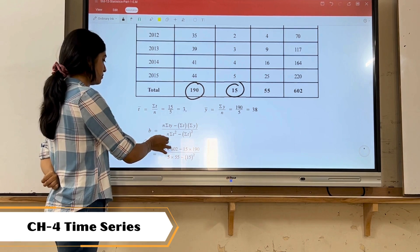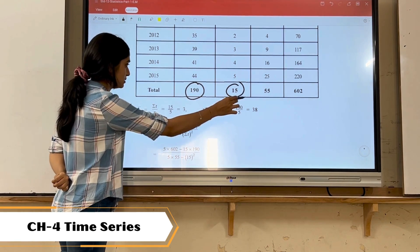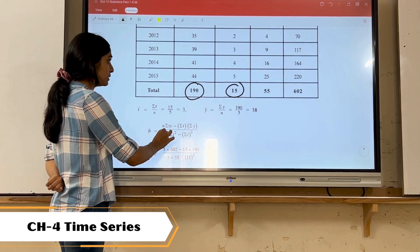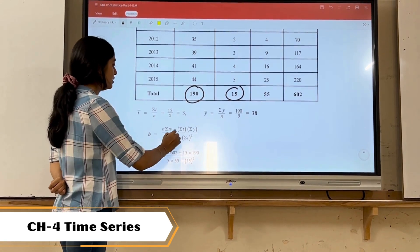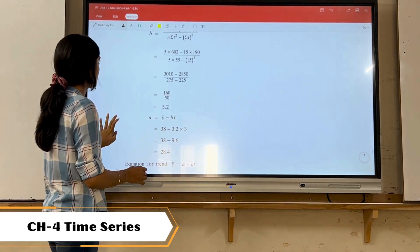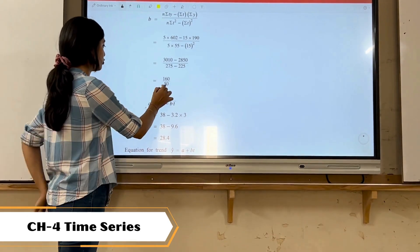Replacing the value of b: n we have 5, sigma t y is 602 minus sigma t sigma y, upon n sigma t square that is 55 minus sigma t that is 15 and 15 square. By calculation we got the value of b as 3.2.